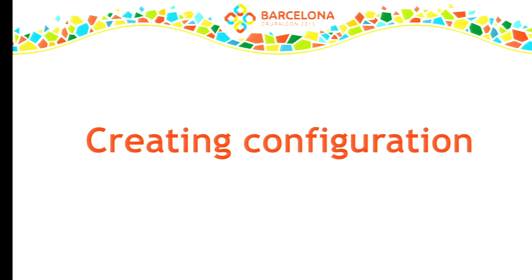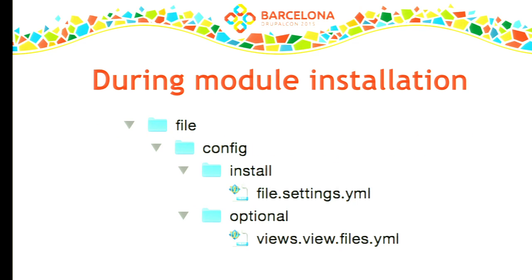So how do I create these types of configuration? Most of the configuration that people will be creating will be during module installation or through the UI. Here's the file module in Drupal 8 — it has two pieces of configuration. It has a simple configuration file called file.settings.yaml, which is a single instance of configuration that configures things for the file module. It also provides a view that allows you to see where files are used.